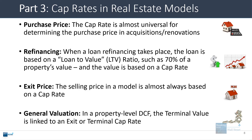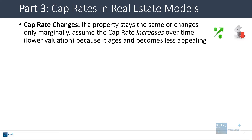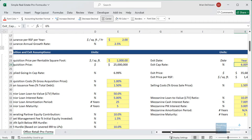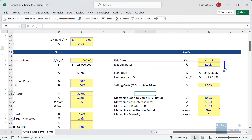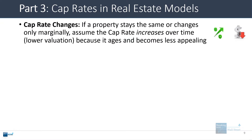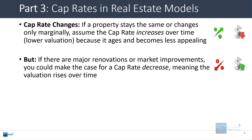Cap rates are also used in general property valuation: if you build a DCF for a property, the terminal value is often linked to an exit or terminal cap rate. If the property stays the same over the holding period or changes only slightly, you probably want to assume the cap rate increases over time — meaning a lower valuation — because the property is older and less appealing at the end of the period. So if the going-in cap rate is 7% for a stabilized property, you'd expect a higher exit cap rate. If there are major renovations or market changes, you could make a case for a cap rate decrease, but this depends heavily on how significant those changes are.